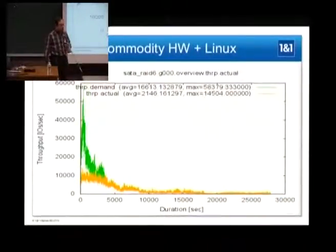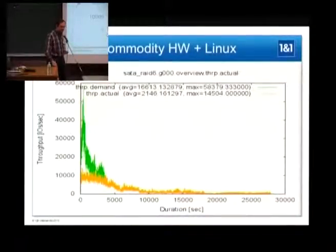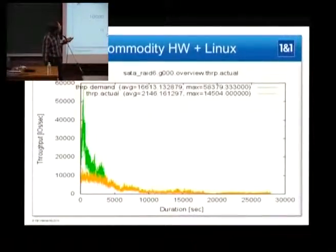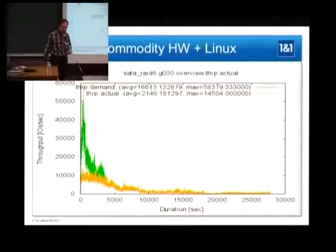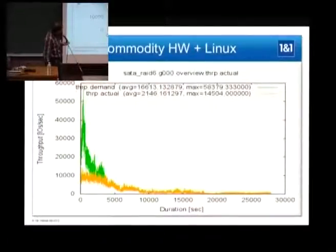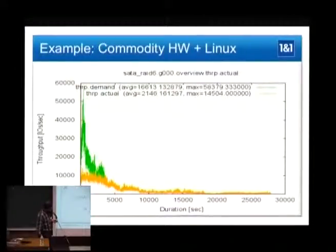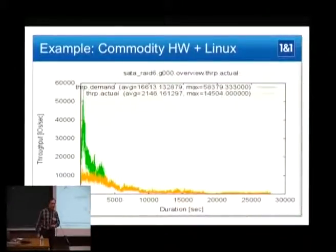Let's compare that to a Linux box with a couple of disks, which costs less than half the price of the commercial storage solution. This is a plain Debian Linux with an iSCSI target on top of that. It's the same pattern, only the time scale is a little bit different. And you'll see the Linux box also delivers about 1,000 IOPS. So this is good news for open source and commodity hardware.